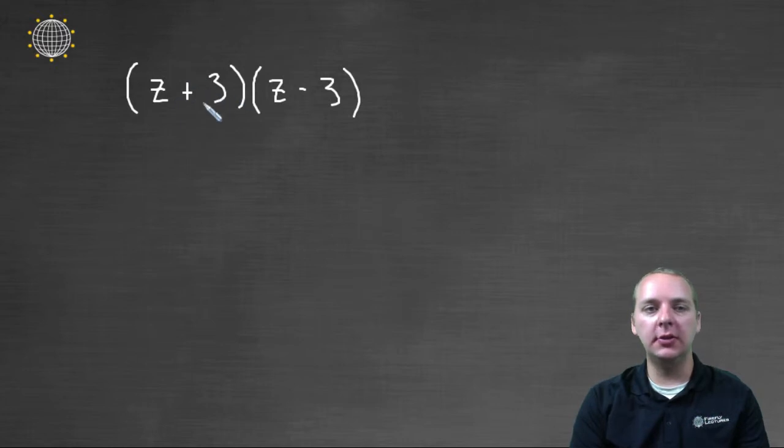So two terms here, z plus three, times another two terms, z minus three. We want to multiply these two polynomials together. So here we go. First of all, let me just write down FOIL, so we have something to look at.